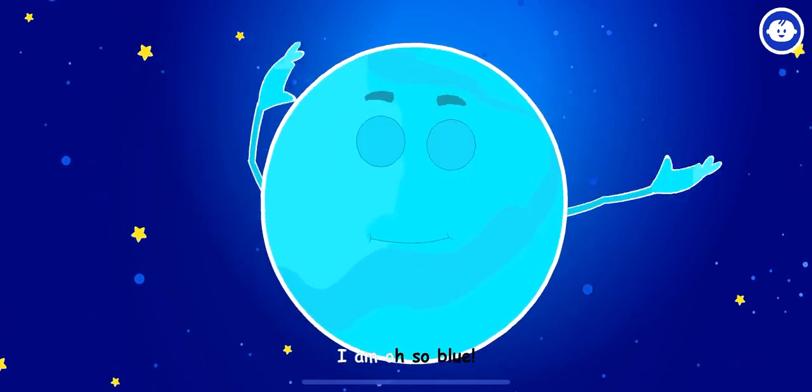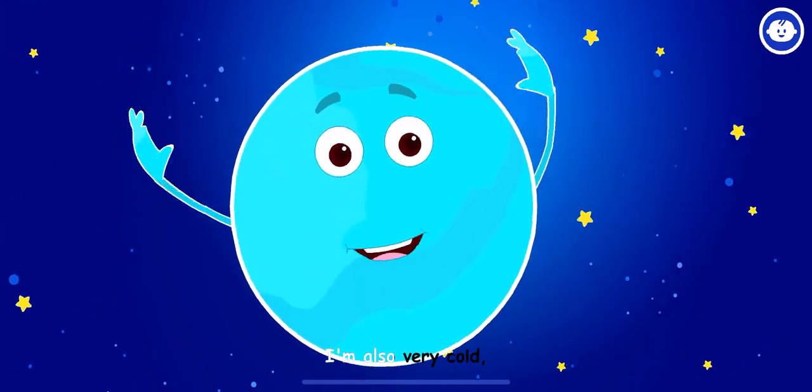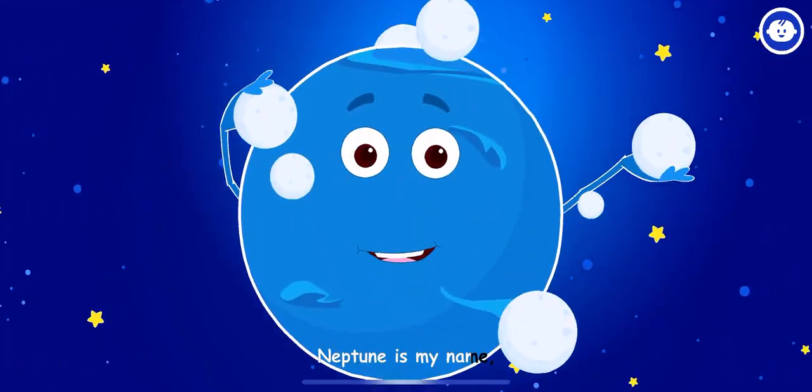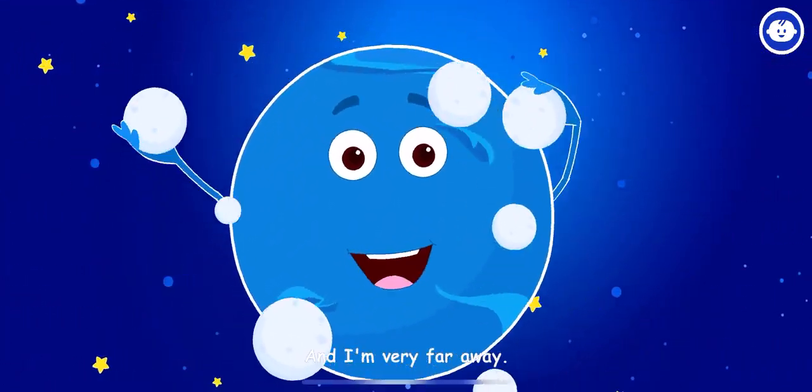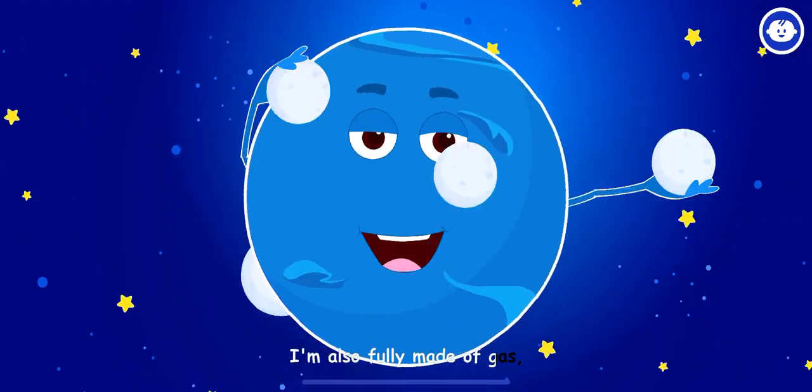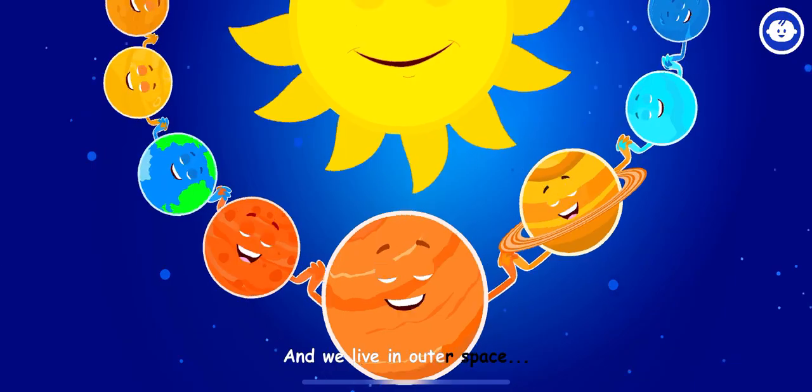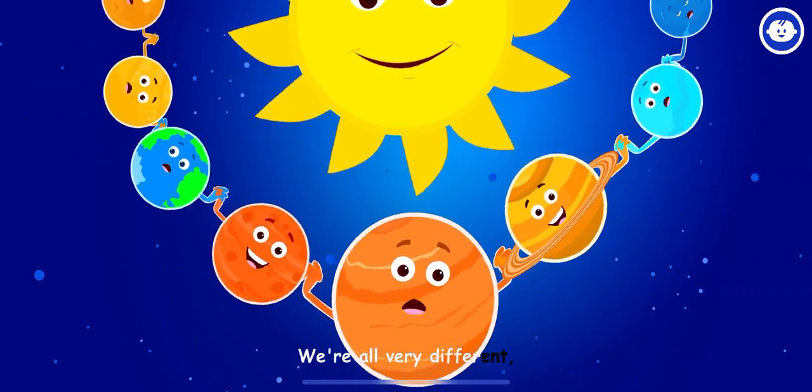My name's Uranus, I am oh so blue. I'm also very cold, I'm made of gas too. Neptune is my name and I'm very far away. I'm also fully made of gas and have many moons, hooray!